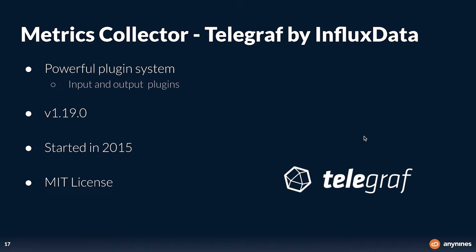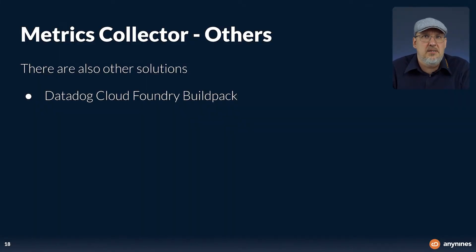A more powerful agent is Telegraf by InfluxData. This tool was pointed out to me by Lukas Frenzel and Jürgen Freund. Telegraf provides a really powerful plugin system for both input and output plugins. You can collect almost any kind of information from various sources — the list of input plugins starts with ActiveMQ and ends with Zookeeper. There are also many output exporters to send metrics to various endpoints. I am really impressed by the possibilities Telegraf provides.